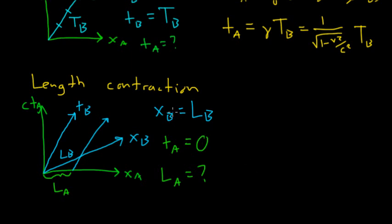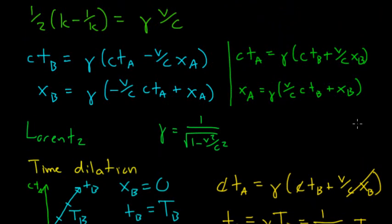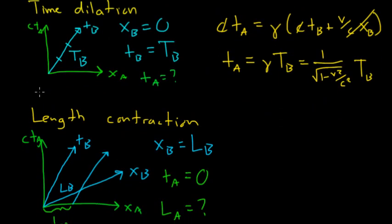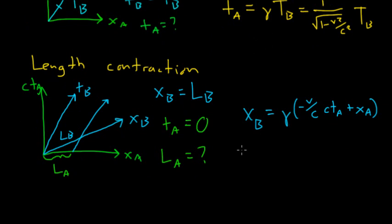LA, we don't know what that is, but we do know that if we're measuring along this line, tA has to be zero along this line, so tA is going to equal zero. Which of our Lorentz transformations relates xB, tA, and LA? Well this would be xA, so we look up here and this one has an xB, a tA, and an xA, so let's write that one down.